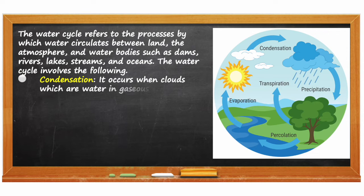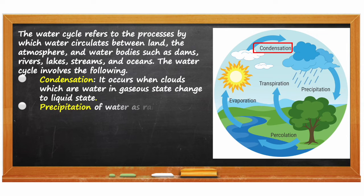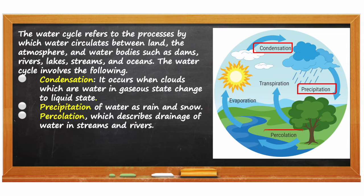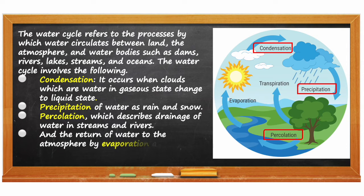Condensation: it occurs when clouds which are water in gaseous state change to liquid state. Precipitation of water as rain and snow. Percolation, which describes drainage of water in streams and rivers. And the return of water to the atmosphere by evaporation and transpiration.